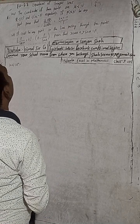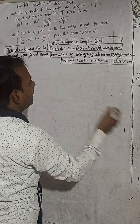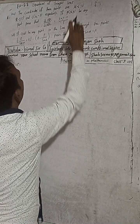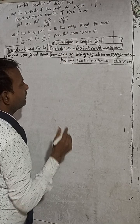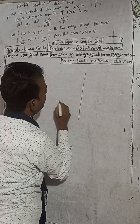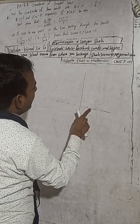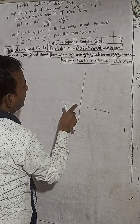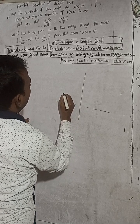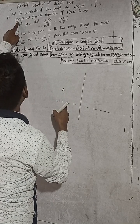First, we will name the points. We can name them anywhere, but name them anti-clockwise. So I will estimate and plot the points. Point A is at minus 6 on the x-axis - that is 1, 2, 3, 4, 5, 6 - so minus 6 is the point.